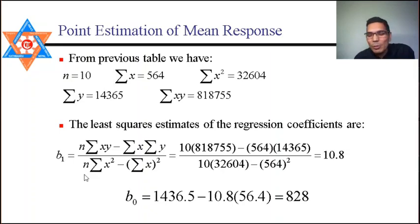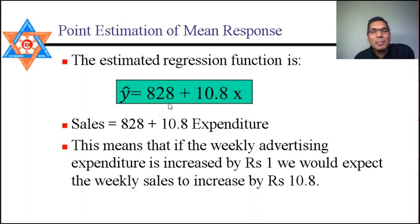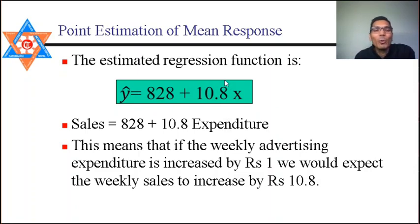The coefficient b₁ = 10.8 indicates that if advertisement expenditure increases by 1 unit, sales increase by 10.8. This regression equation ŷ = 828 + 10.8x can be used to predict sales. For example, if advertisement expenditure is 50, multiply by 10.8 and add 828 to get expected sales of 1360, which is a point estimate or forecast.